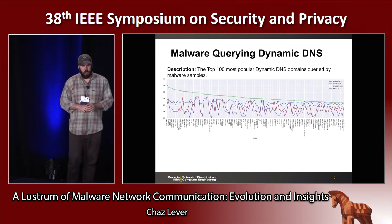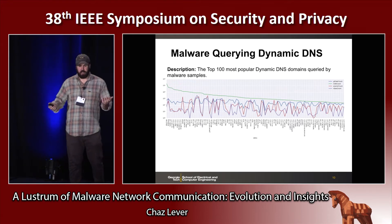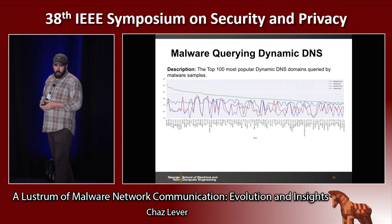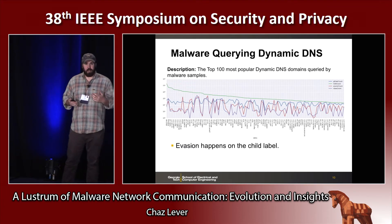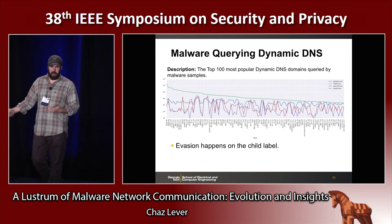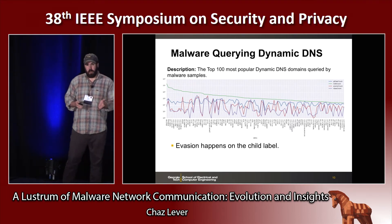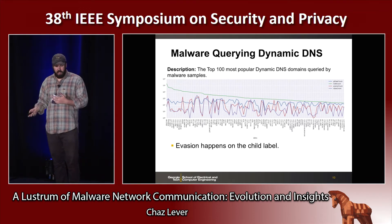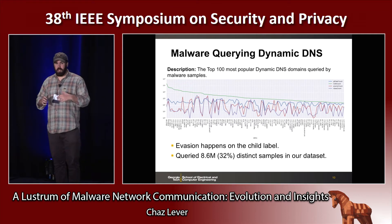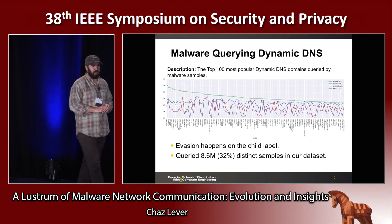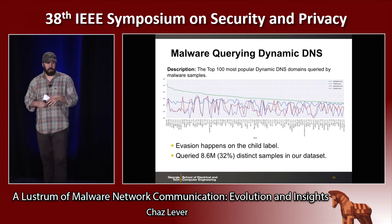Another thing we looked at was how often malware queries dynamic DNS providers. This shows the top 100 most popular DynDNS providers queried by samples in our data set. Unlike the previous case with domain polymorphism, evasion here happens on the child label — attackers don't register the effective second-level domain, which is usually owned by the DynDNS provider; they register a label underneath. This also means you can't block that effective second-level domain because you might block legitimate behavior as well. Interestingly, almost 32% of all samples in our study made queries to DynDNS providers, so they're heavily used for abuse by malware authors — and DynDNS is a good place to look for abuse.